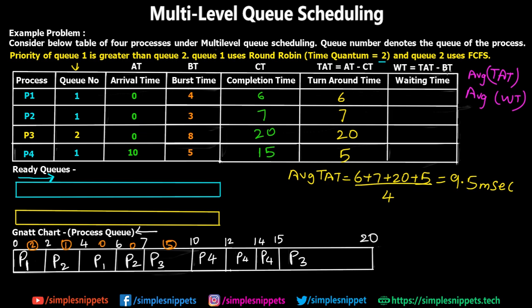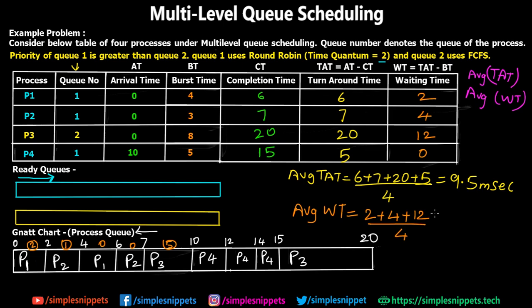Waiting time equals turnaround time minus burst time. For P1: 6 − 4 = 2. For P2: 7 − 3 = 4. For P3: 20 − 8 = 12. For P4: 5 − 5 = 0. Average waiting time = (2 + 4 + 12 + 0) / 4 = 18 / 4 = 4.5 milliseconds. That completes the entire numerical on multi-level queue scheduling.